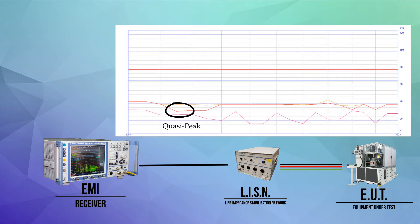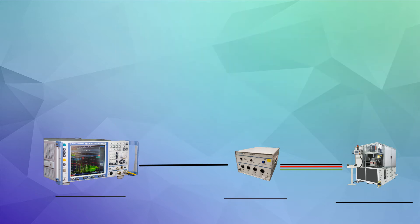If the peak value goes over the quasi-peak limit line, a narrowband quasi-peak measurement is performed to ensure the actual value is not over the limit.